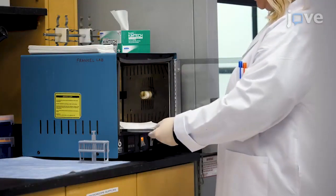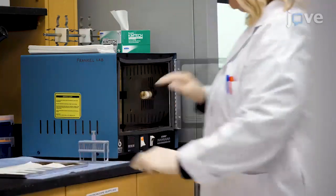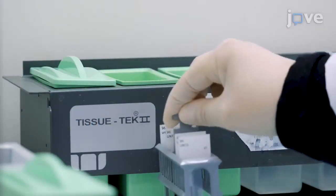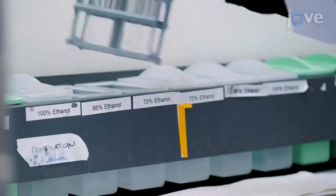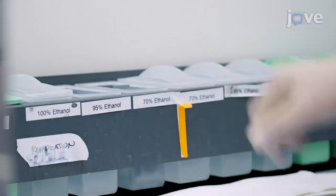Take the slides out of the oven and allow them to cool for 5 to 10 minutes in a vertical slide rack. Then use a slide staining set to treat the slides three times with xylene and once with 100% ethanol, 95% ethanol, and 70% ethanol for 10 minutes each.